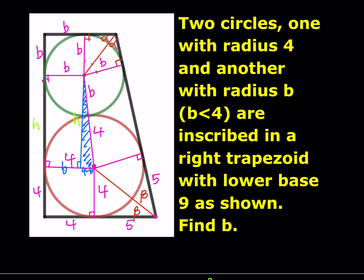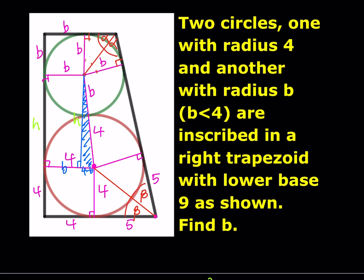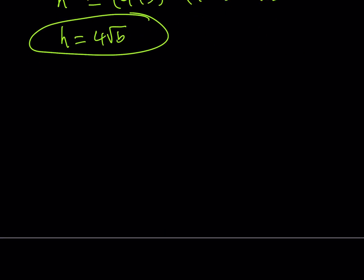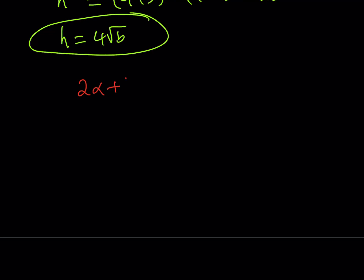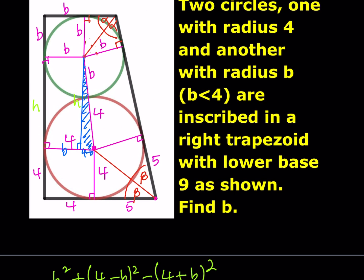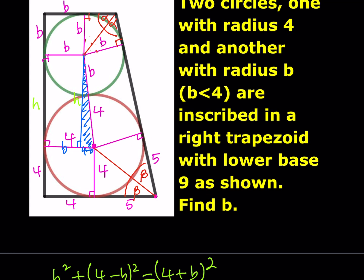What do we know about alpha and beta? Looking at the big picture, these angles add up to 180° because they are supplementary. But those angles are two alpha and two beta, so 2α + 2β = 180°. Dividing both sides by 2 gives α + β = 90°. That means they are complementary.